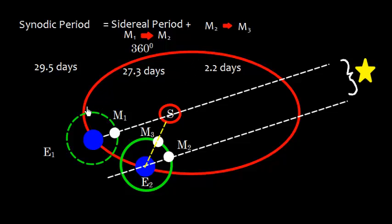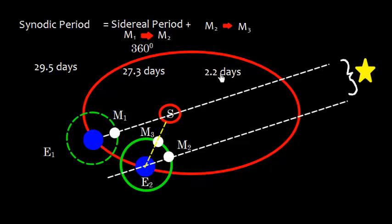Because Earth revolves around the Sun in an elliptical orbit and the Moon revolves around Earth in an elliptical orbit, both following Kepler's laws, the speed of each body varies. This means the additional 2.2 days keeps varying, resulting in the synodic period of 29.5 days varying by plus or minus 12 hours.